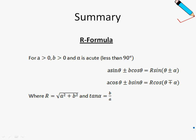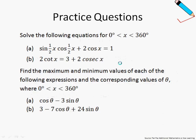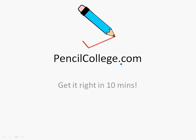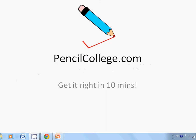Just to summarize, this is the R formula — you can pause the video here and take it down if you haven't already. Please take note of the conditions for the R formula: A should be greater than zero, similarly for B, and alpha should be an acute angle, which is less than 90 degrees. Before I leave, I just want to leave you with some practice questions. Thank you for watching this video — I'll see you in the next one, and for more videos please log on to pencilcollege.com.